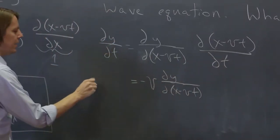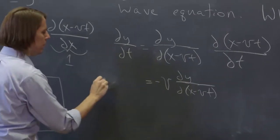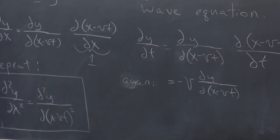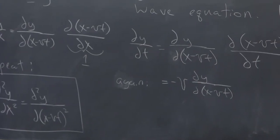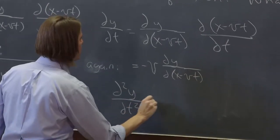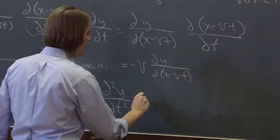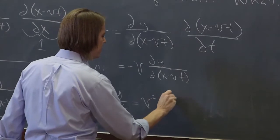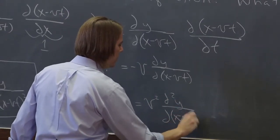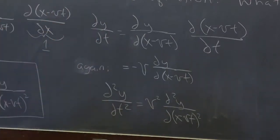And if you do it again, you get the second derivative, and it pulls out another minus v, which becomes v squared. So d²y/dt² equals v² d²y/d(x-vt)².